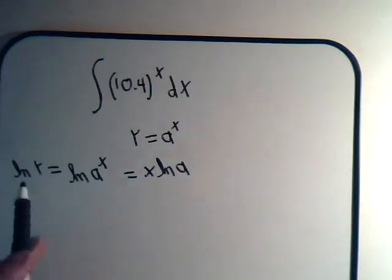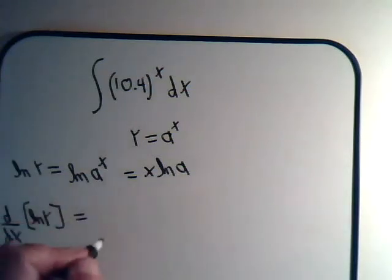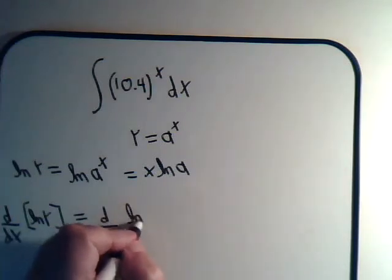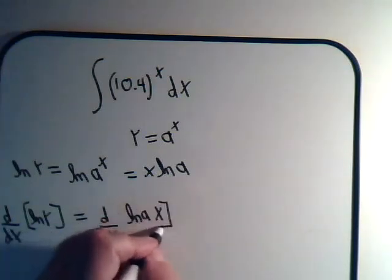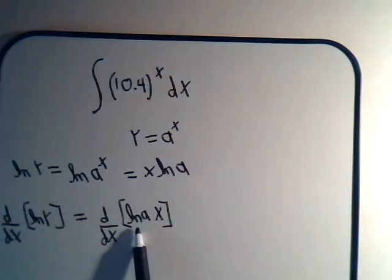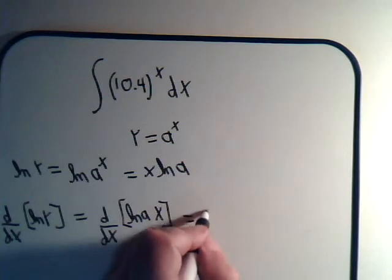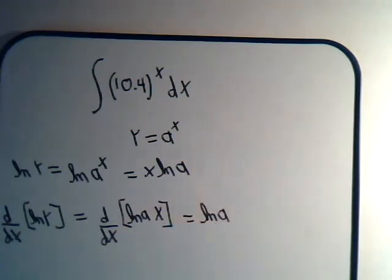Now, if we differentiate both sides of this equation, we would have d/dx of the natural log of y equals d/dx of x times the natural log of a. And of course, this is just a constant times x, and the derivative of that is 1. So this side of the equation is just the natural log of a.